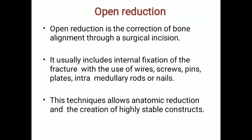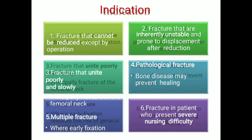Open reduction is the correction of bone alignment through a surgical incision. The surgical incision can be intraoral — for example, anterior vestibular incision or degloving incision for opening a parasymphysis or symphysis region. For the angle region, there can be an intraoral incision as well as an extraoral incision such as a submandibular incision or Risdon's incision. Open reduction usually includes internal fixation of the fracture using wires, screws, pins, plates, intramedullary rods, or nails.